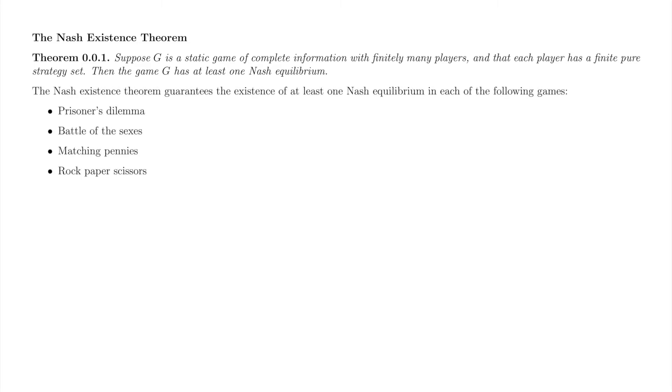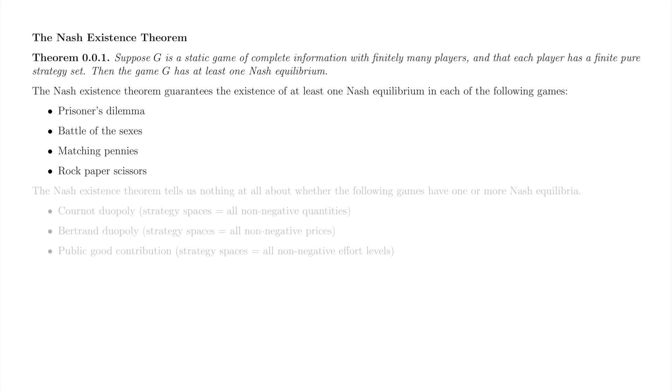Nash's theorem allows us to look at a game and determine that it does have a Nash equilibrium. All of the matrix games we've considered, which have finitely many players and finite pure strategy sets, have Nash equilibria. Nash's theorem does not apply to games with one or more infinite pure strategy sets. It tells us nothing at all about such games. The games listed below all have infinite pure strategy spaces, so Nash's theorem tells us nothing about whether these games have Nash equilibria.